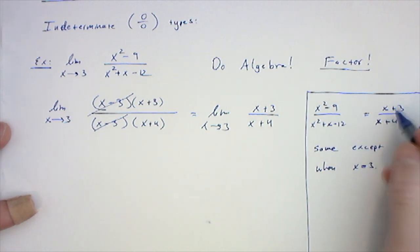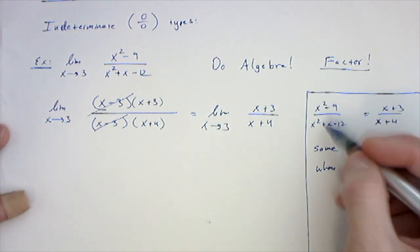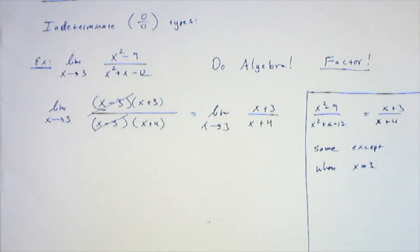Here, when I plug in 3, I get 6 over 7. Here, when I plug in 3, I get 0 over 0. But here's the thing I'm trying to emphasize: when we're taking the limit as x approaches 3, we don't actually care what's happening at 3.